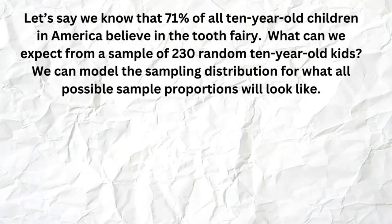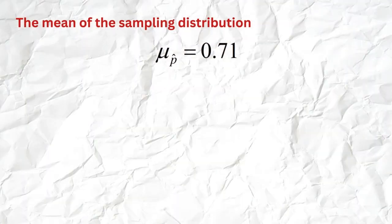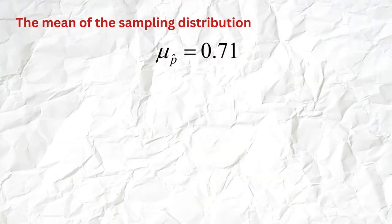It's very hard to look at every possible sample, but what we can do is model a sampling distribution — and this is the most important part of the video. If 71% of 10-year-olds believe in the tooth fairy, what would we expect for a sample of 230? We don't even have to go get any samples to know what that sampling distribution looks like. As long as we know the sample size (230) and the true population proportion p (0.71), we can model it completely.